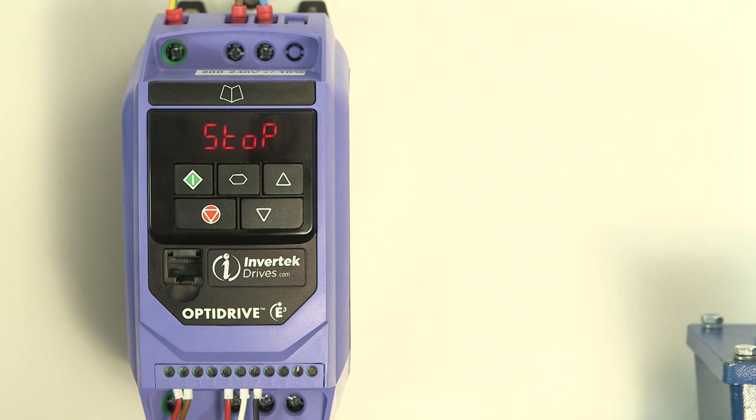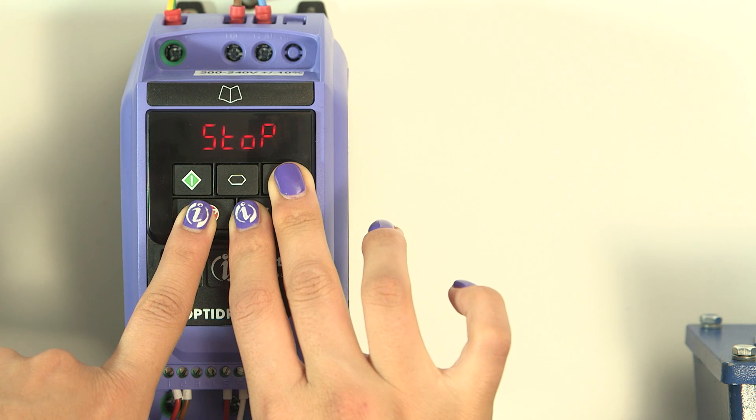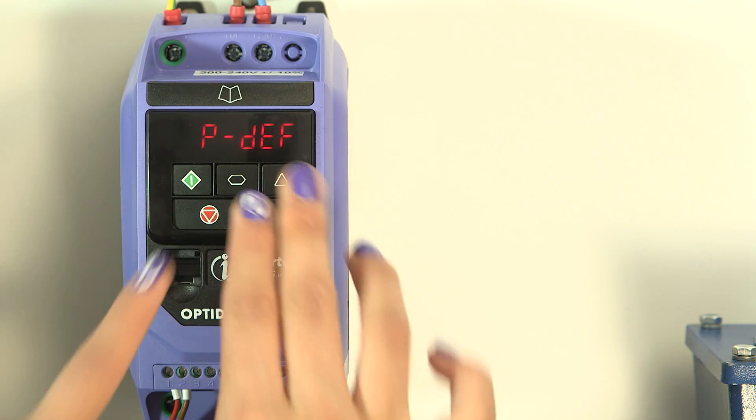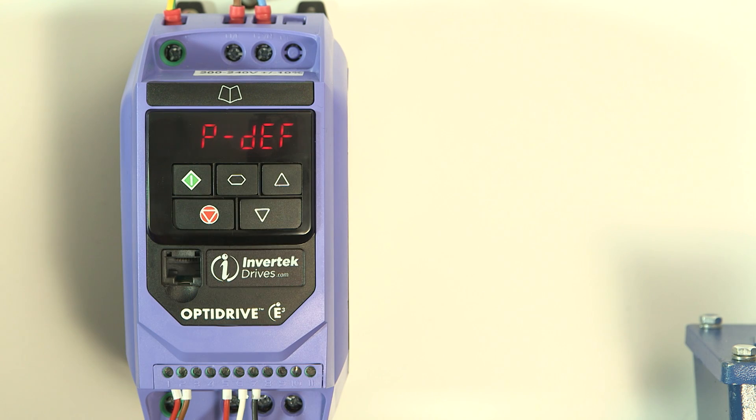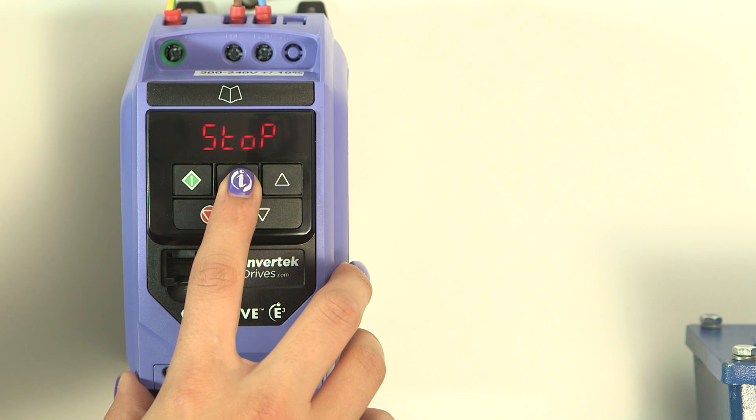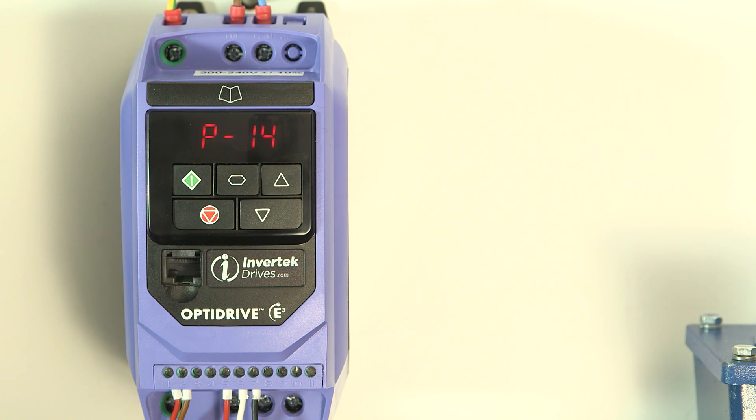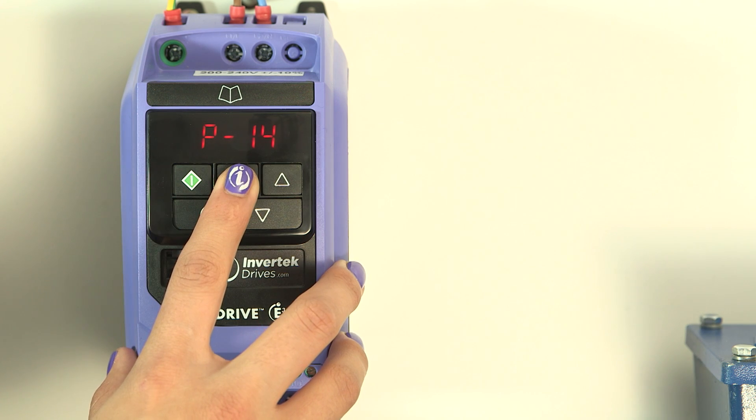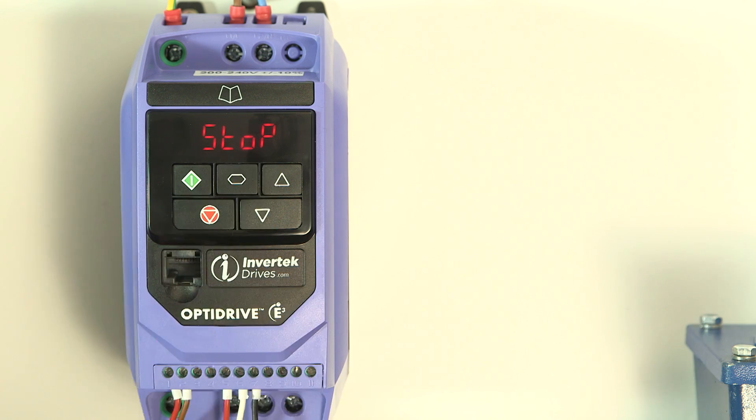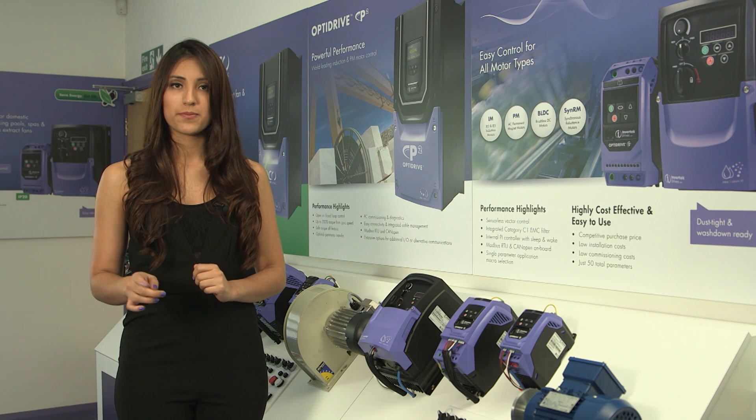Remember, if you get stuck, you can easily reset all the parameters to the factory settings by pressing up, down and stop buttons together for a second or so. Then reset the drive with the stop button and start again. So that's cleared all the changes I just made. Finally, parameter 14 allows us access to the extended parameters, which allow a lot of other adjustments to suit the wide range of applications. But we will leave that for another time. There is a lot more information on the website. Take a look at invertecdrives.com. Bye for now.